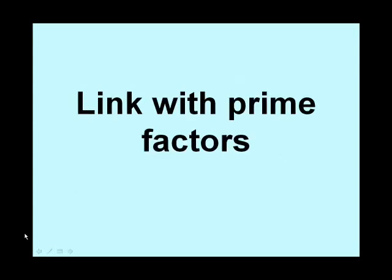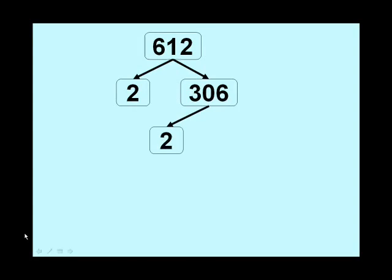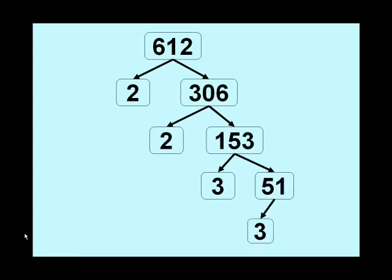There is, as I've mentioned already, a link with prime factors. If we take the previous example, 612, and start looking at the prime factors of that number, you can divide it by 2, and you get 306. Then you can divide that by 2, and you get 153. Then you can divide that by 3, and you get 51. Then you can divide 51 by 3, and get 17.